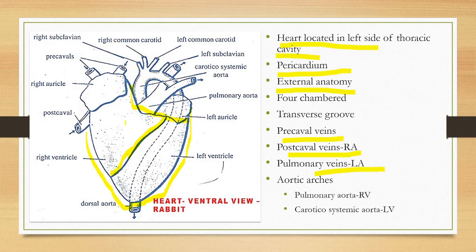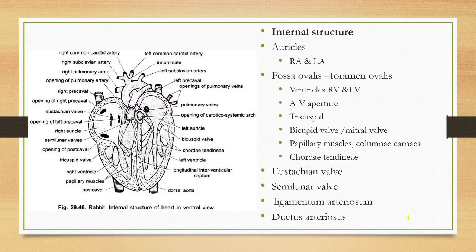The right ventricle gives rise to the pulmonary aorta. The left ventricle gives rise to the carotico-systemic aorta. So to remember: the pulmonary aorta arises from the right ventricle, and the carotico-systemic aorta arises from the left ventricle.